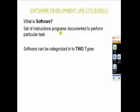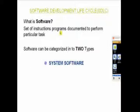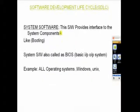Software has been categorized into two types. The first one is system software and the second is application software. System software provides an interface to the system hardware components, and all the rest are called application software.